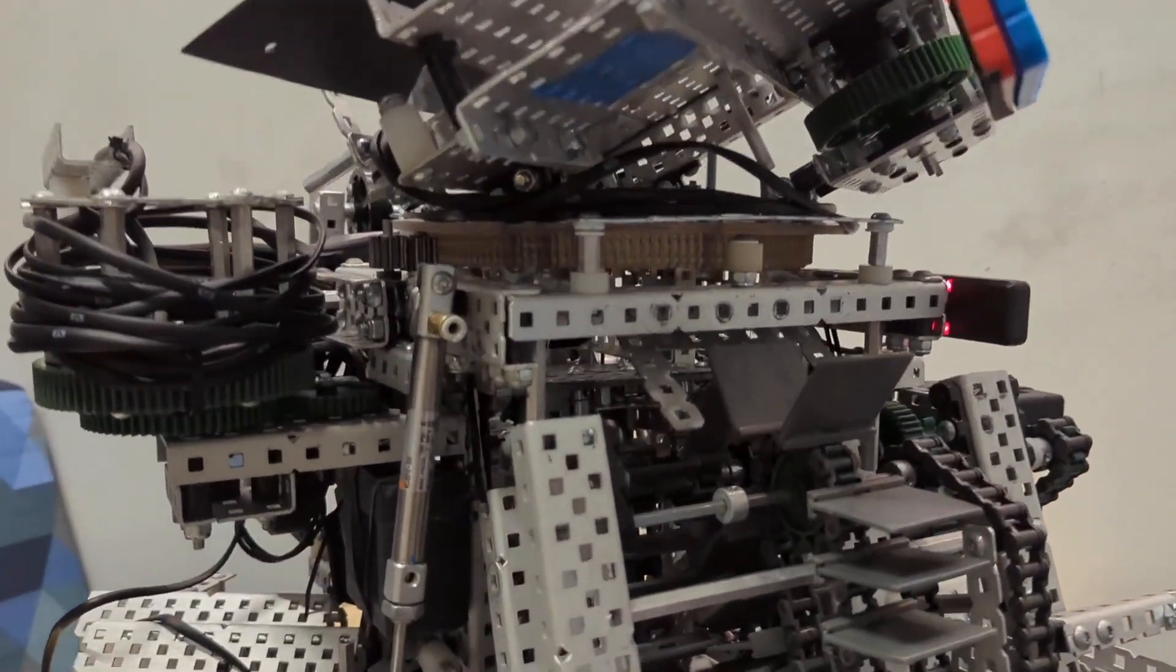A disc sits on this plate after being intaked, and then that plate goes up, sending the disc into the turret.